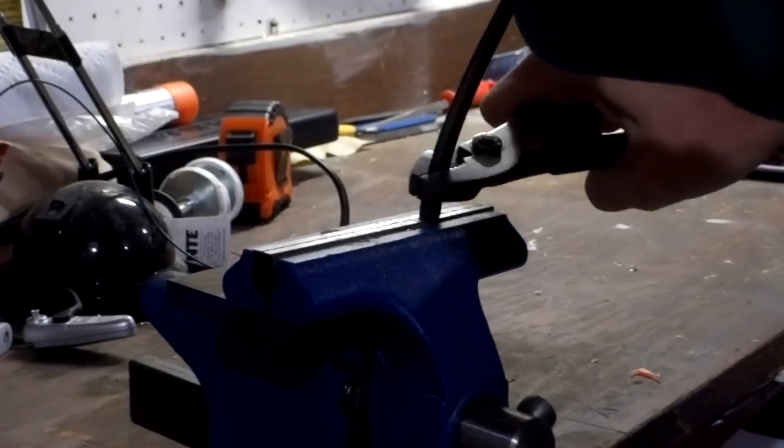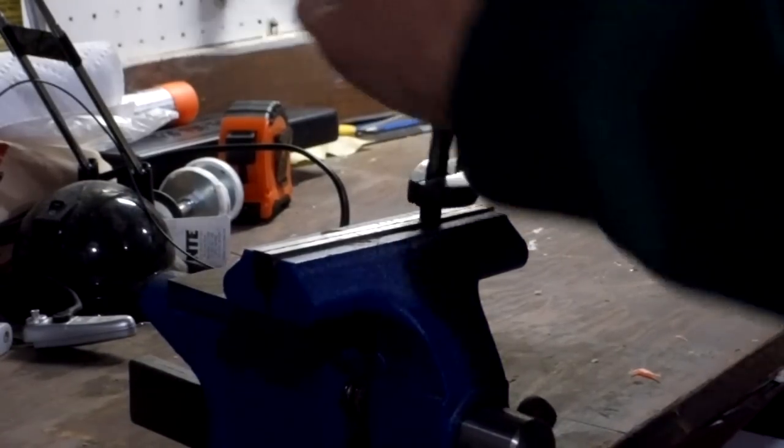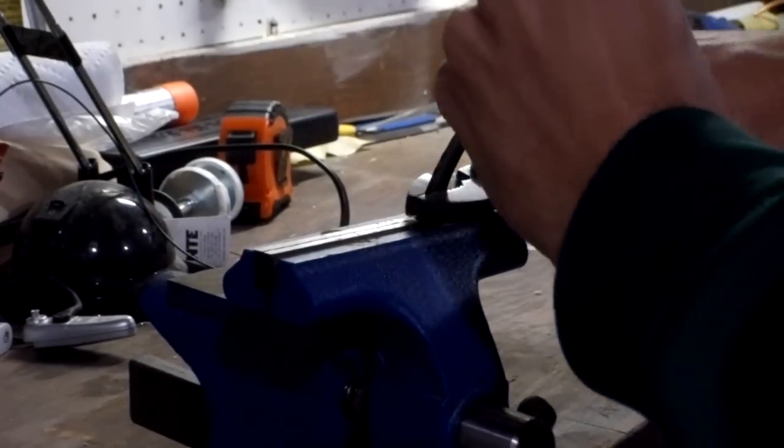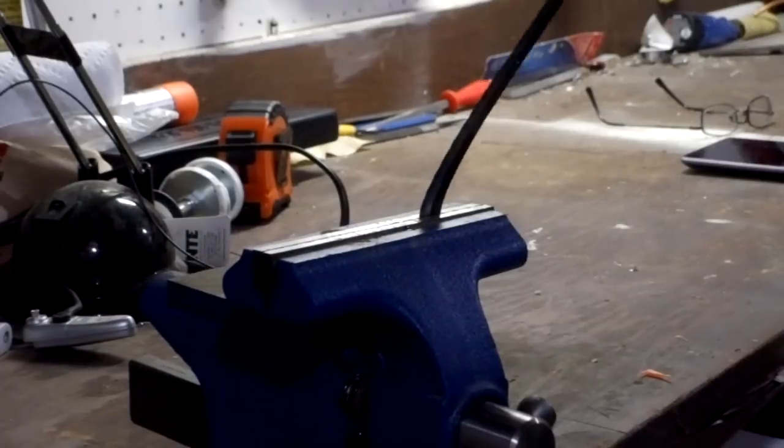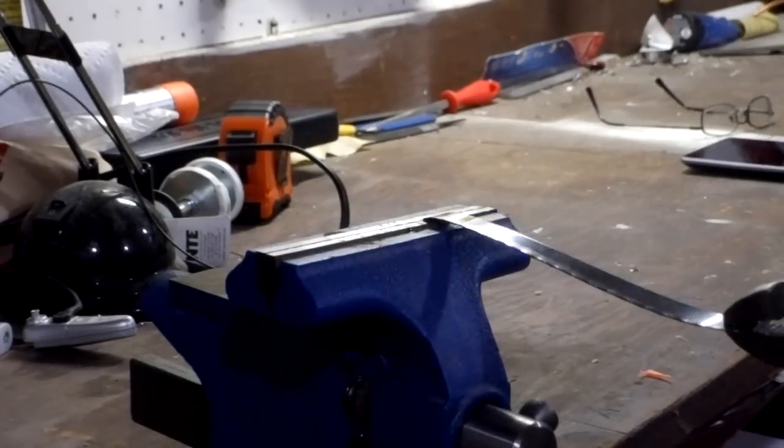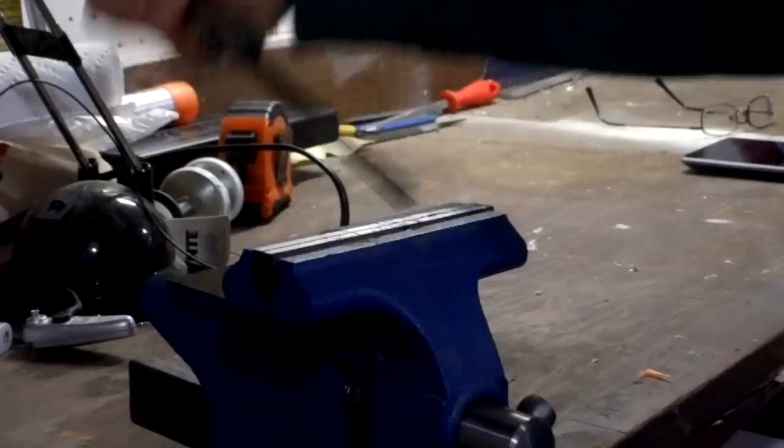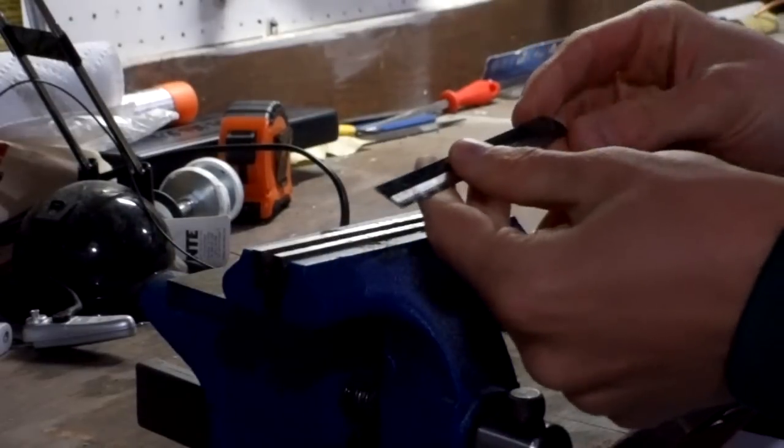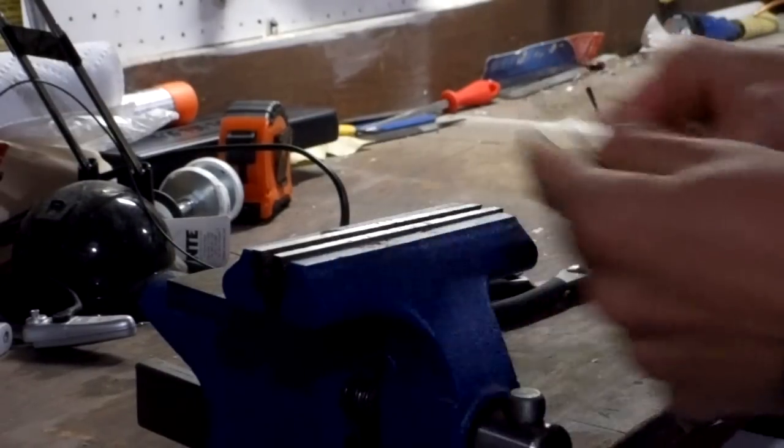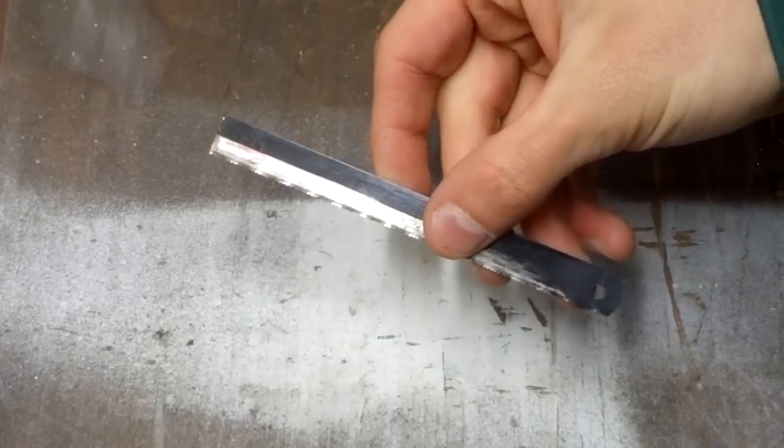Now all we really need to do is bend this blade back and forth until it snaps. There we go. Now I've got a small blade that's just the right size.